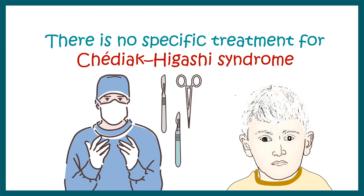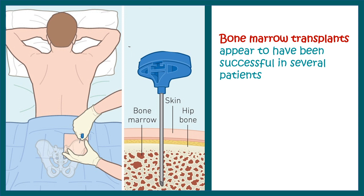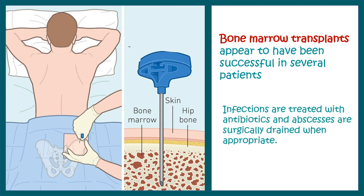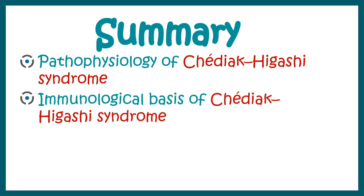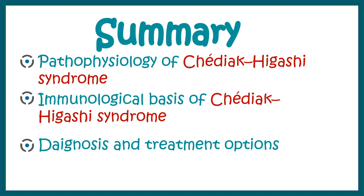There is no specific treatment for Chediak-Higashi syndrome so far, but if detected early, bone marrow transplant can give good results in some patients. Secondary infections like bacterial or viral infections can be treated with specific antibiotic cocktails or antivirals. Since these patients are highly susceptible to Staphylococcus aureus, abscesses can sometimes be surgically drained or removed. In this video we covered the pathophysiology, immunological basis, diagnosis, and possible treatment options for Chediak-Higashi syndrome.